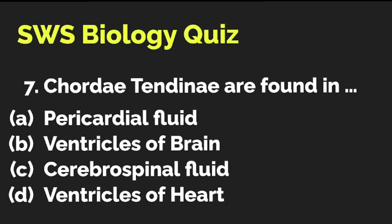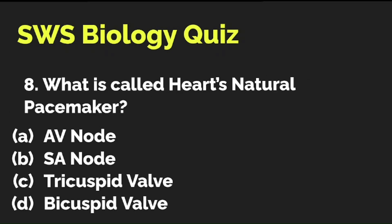Chordae tendineae are found in A) pericardial fluid, B) ventricles of the brain, C) cerebrospinal fluid, or D) ventricles of the heart? The correct answer is D — ventricles of the heart. What is called the heart's natural pacemaker? Is it A) AV node, B) SA node, C) tricuspid valve, or D) bicuspid valve? The correct answer is B — SA node, which is the sinoatrial node.